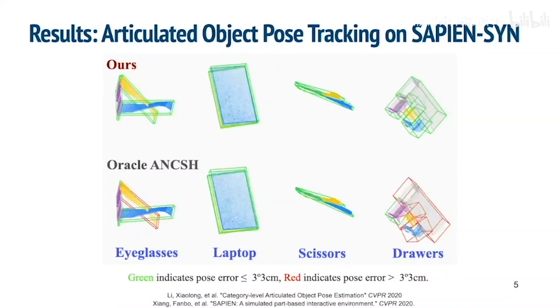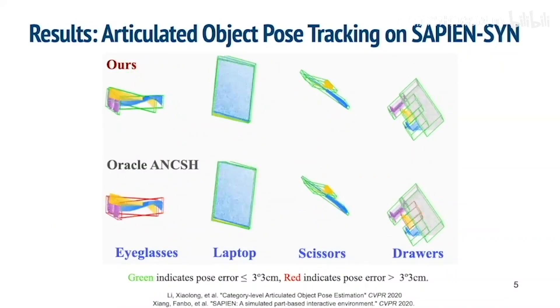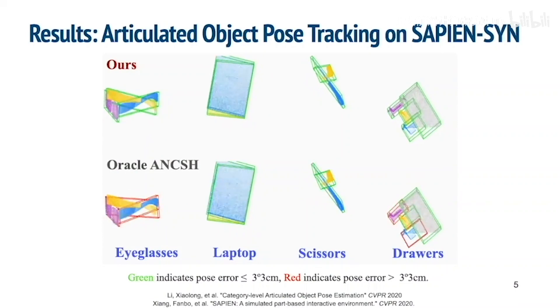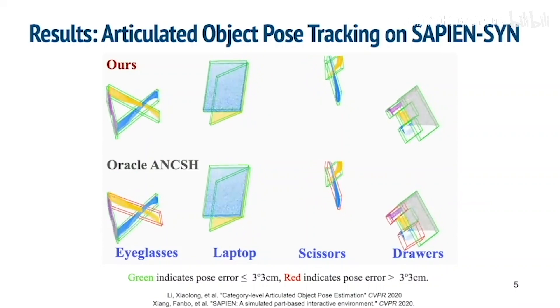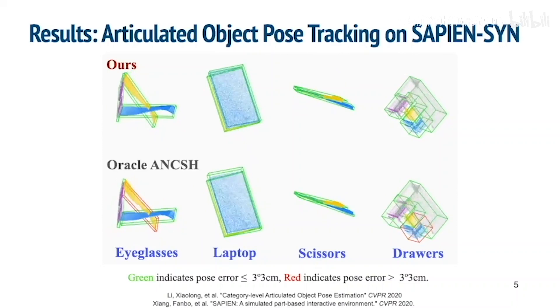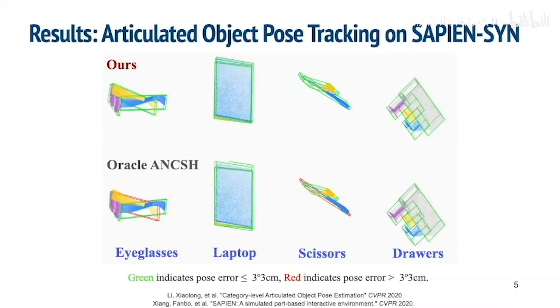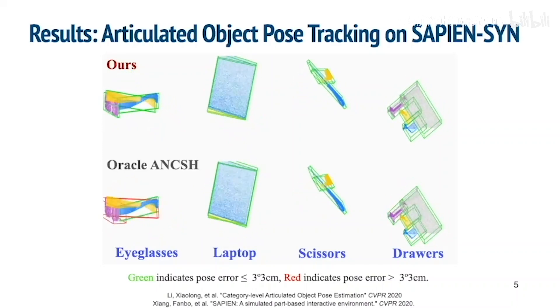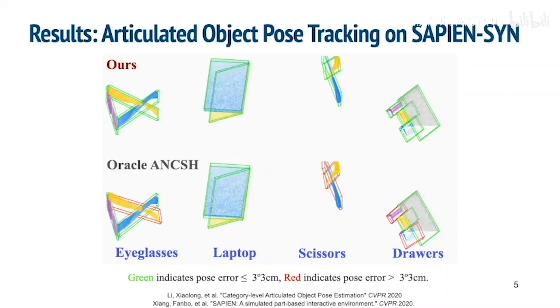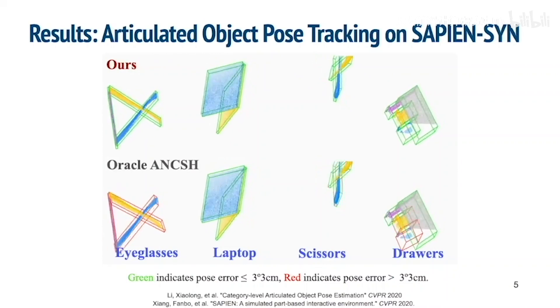For articulated objects, we show qualitative comparison on our Sapien synthetic dataset, where both the camera viewpoint and the object joint state change over time. Compared to the state-of-the-art single-frame category-level articulated object pose estimation method, our predictions are more accurate, temporally coherent, and robust to occlusions.